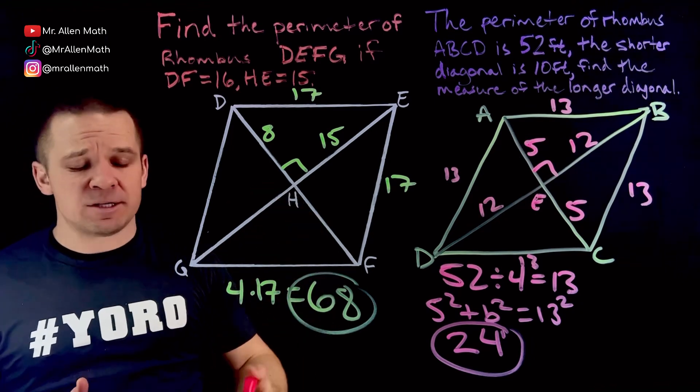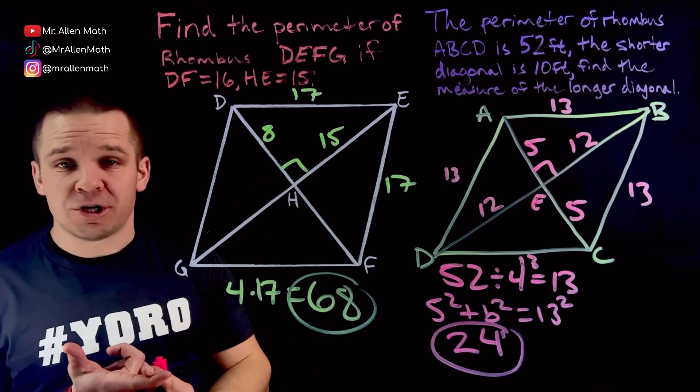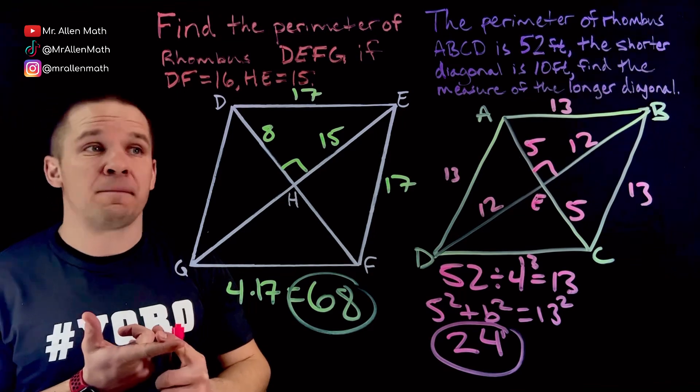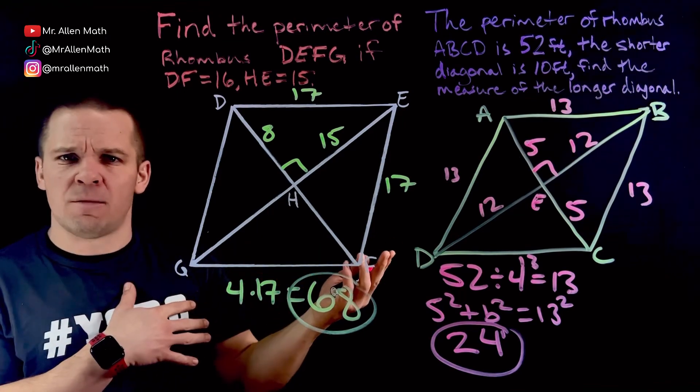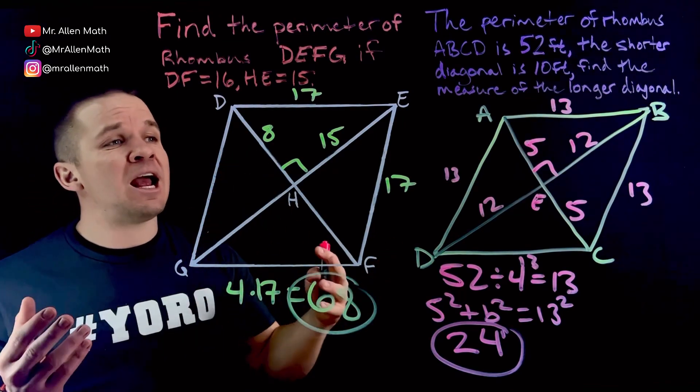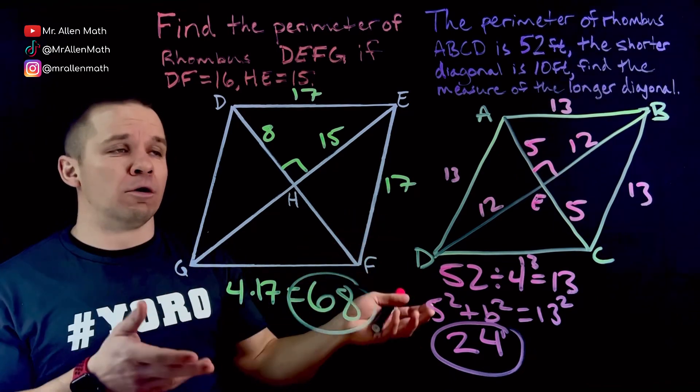Key things to remember with the rhombus, diagonals are perpendicular to each other, right? They perpendicularly bisect each other, already bisecting from our parallelogram, but the perpendicular is added in there. And all of these sides are congruent.